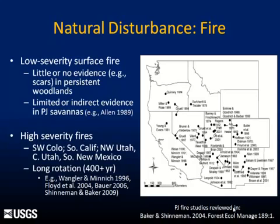Much of the evidence we have for fire regimes in pinyon-junipers in the Southwest comes from dating trees adjacent to PJ systems, like ponderosa pine, which scar fairly well and allow us to make inferences about fire behavior in adjacent pinyon-juniper woodlands or savannas. There was at least a little more direct evidence of the role of high-severity fires, especially in persistent woodlands. Additional research since then generally points to a fairly long rotation fire regime — although these are fairly persistent, closed, older stands affected by high-severity fires, the average return interval is quite lengthy, usually 400 years or longer.